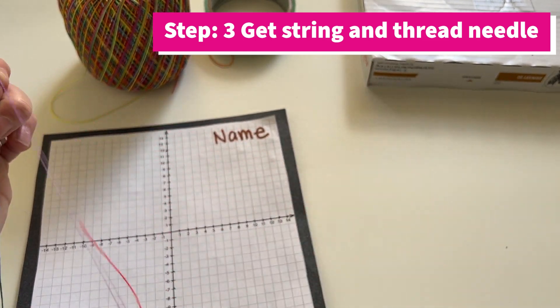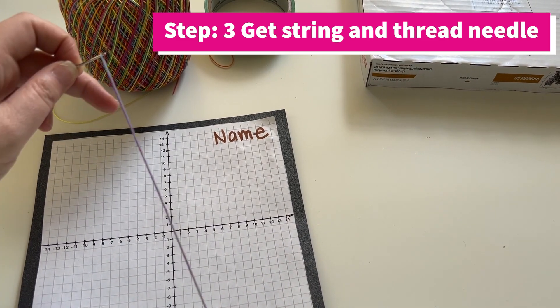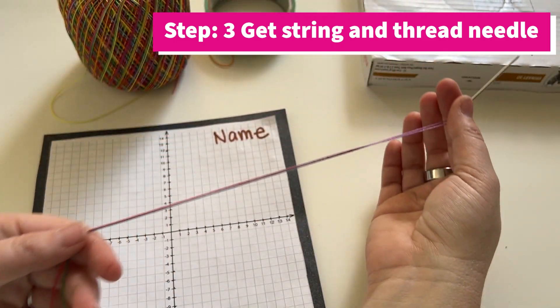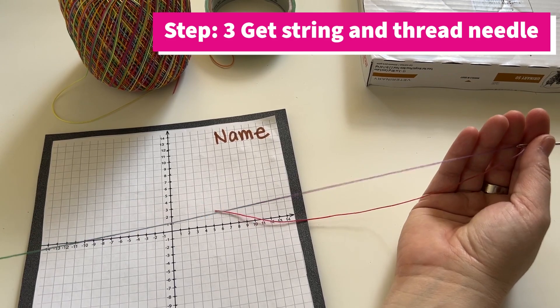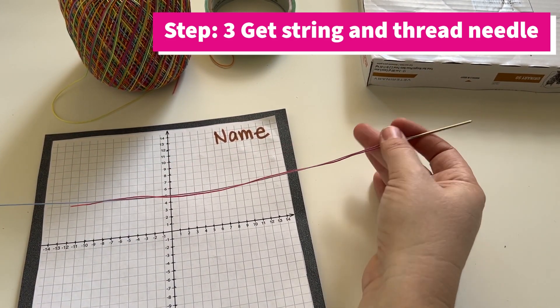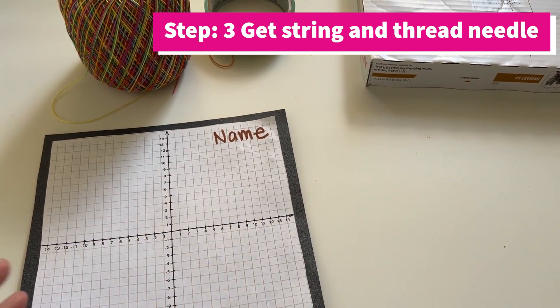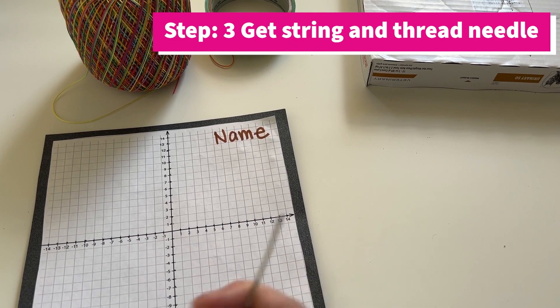You're going to want a little tail but not too long because you don't want it to come off the needle, but you also don't want it to be doubled up when you're threading through the paper. About the size of our paper here, and now we're going to be ready to go.